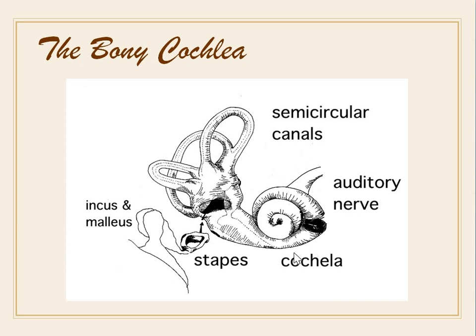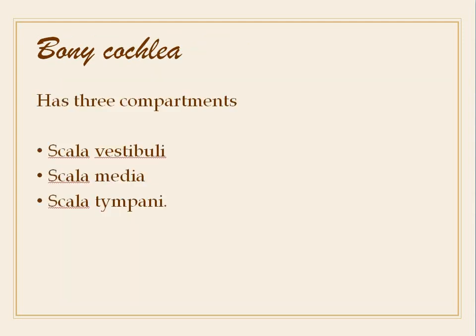Here you can see the auditory nerve, the cochlea, the oval window where the stapes footplate touches, and the three semicircular canals. The bony cochlea has three components: the scala vestibuli, the scala media, and the scala tympani.